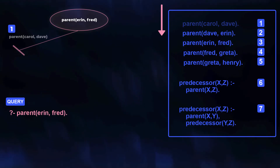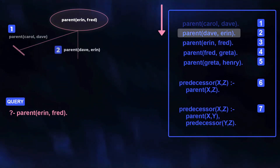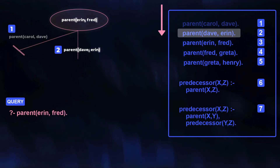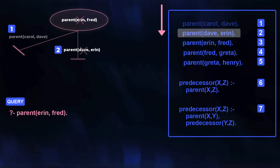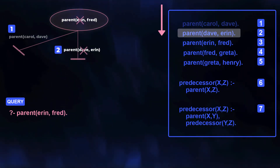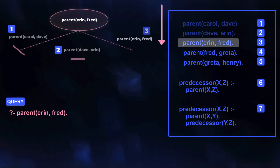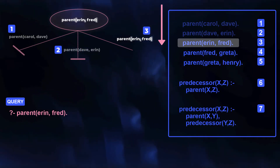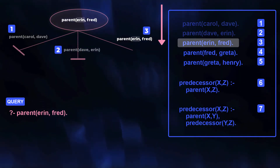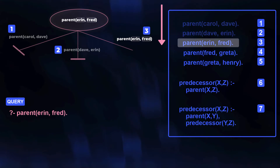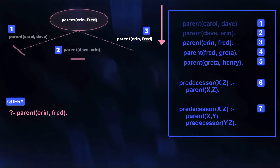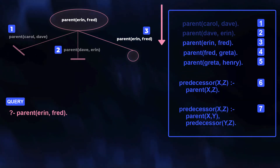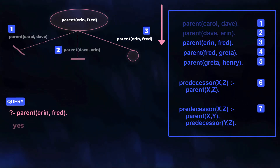Prolog continues the search to clause 2. The predicate name and arity are the same, but again the arguments don't match. The search continues to clause 3, where the predicate name and arity are the same, and the arguments all match too. So clause 3 lets Prolog succeed. This empty node means there's nothing left to prove, and the original question is true.